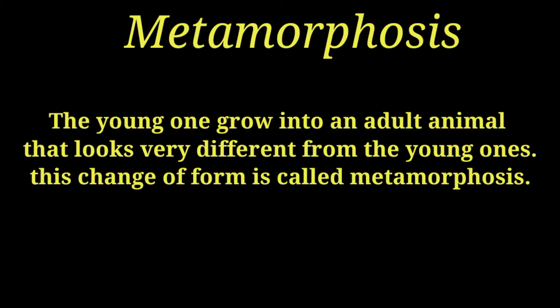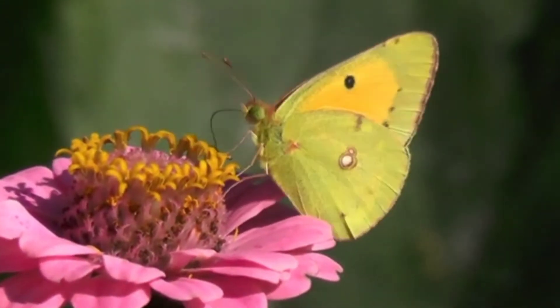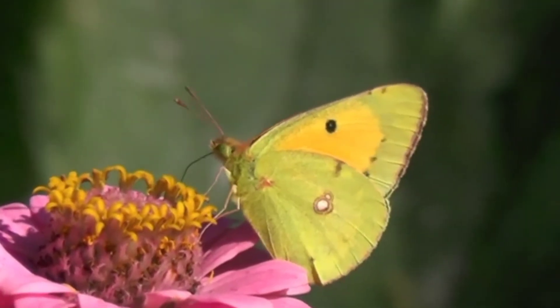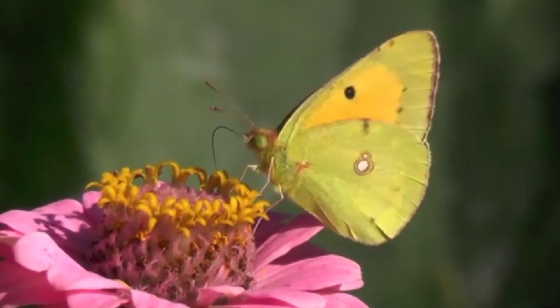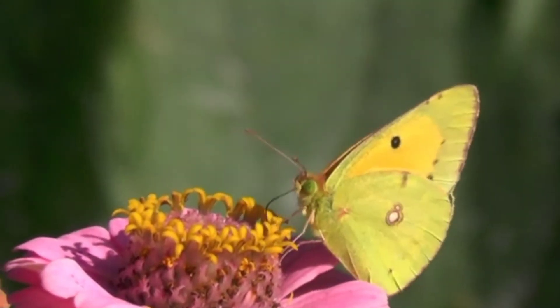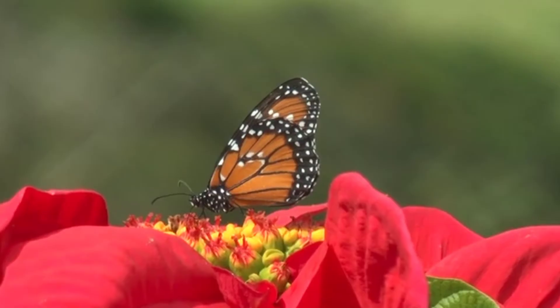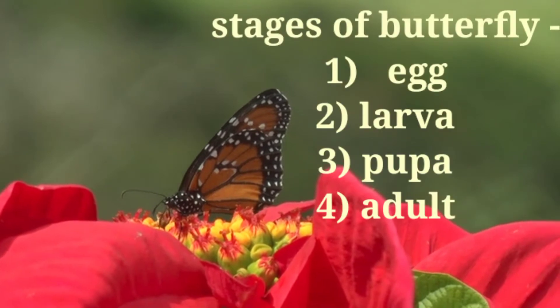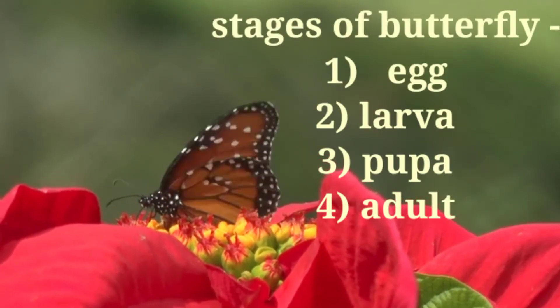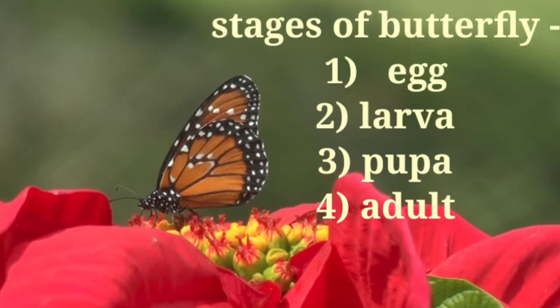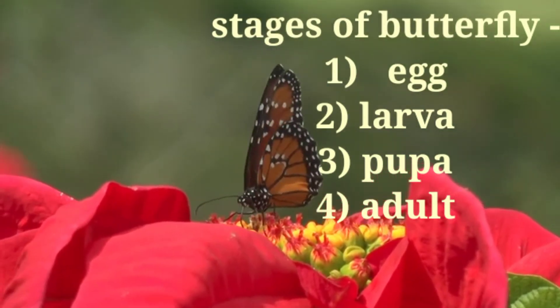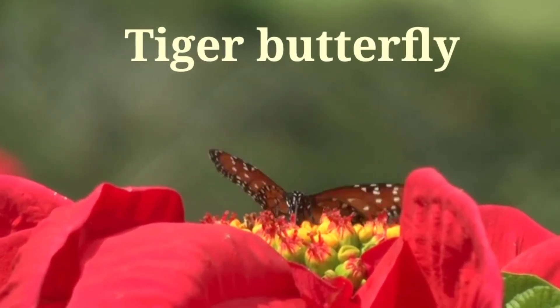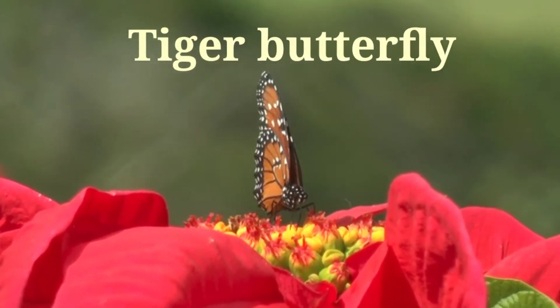This change is called metamorphosis. Butterflies of various shapes and beautiful colors are part of our environment. They live their life among plants. As a butterfly grows, it passes through four stages: egg, larva, pupa, and adult. The adult stage is called the butterfly.